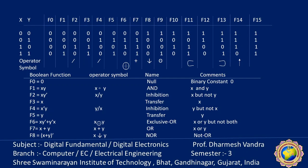Whatever the input value is transferred to the output side. F4: in the F4 column, only one combination gives output 1, and that is when x=0, y=1 — meaning x̅·y. This is also inhibition but y over x — y inhibition.